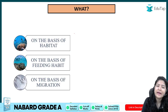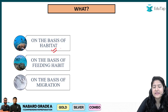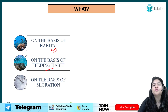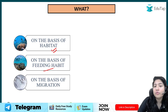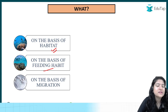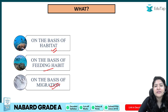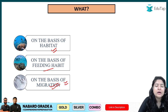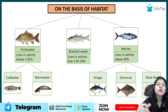We will now look at classification based on habitat, feeding habit, and migration. Starting with habitat — the classification is based on what type of water environment the fish prefer. We also consider what food they eat: herbivores depend on aquatic plants, omnivores eat both plants and other organisms, and carnivores depend on other animals present in the water.